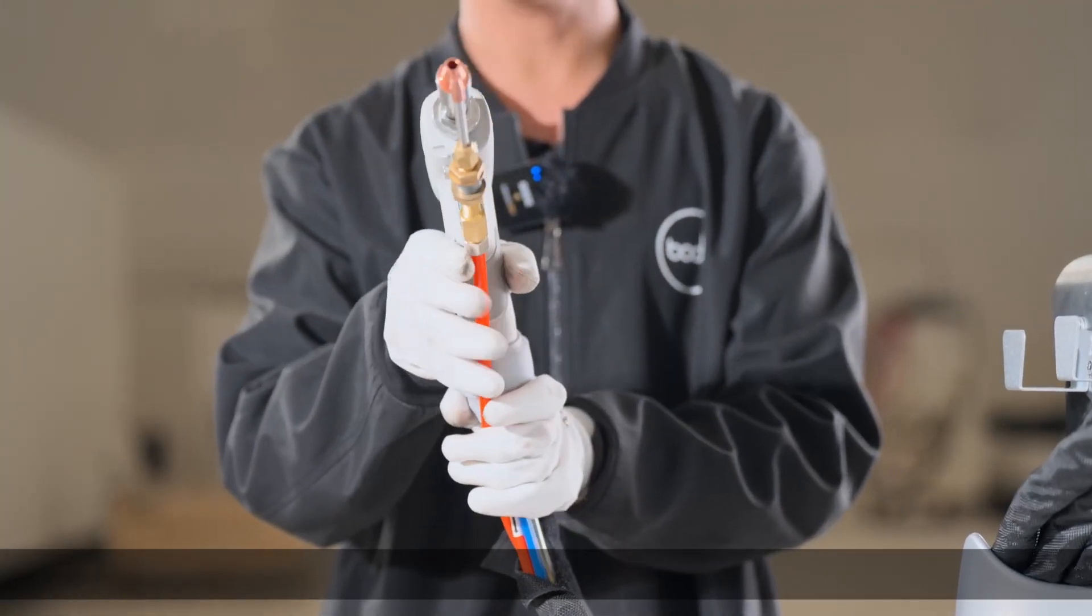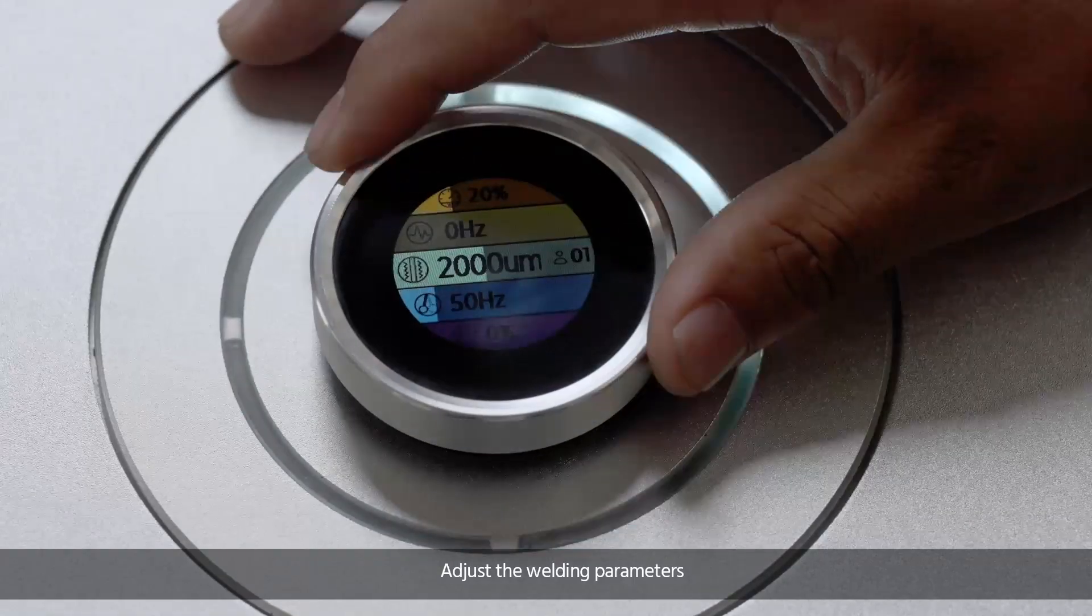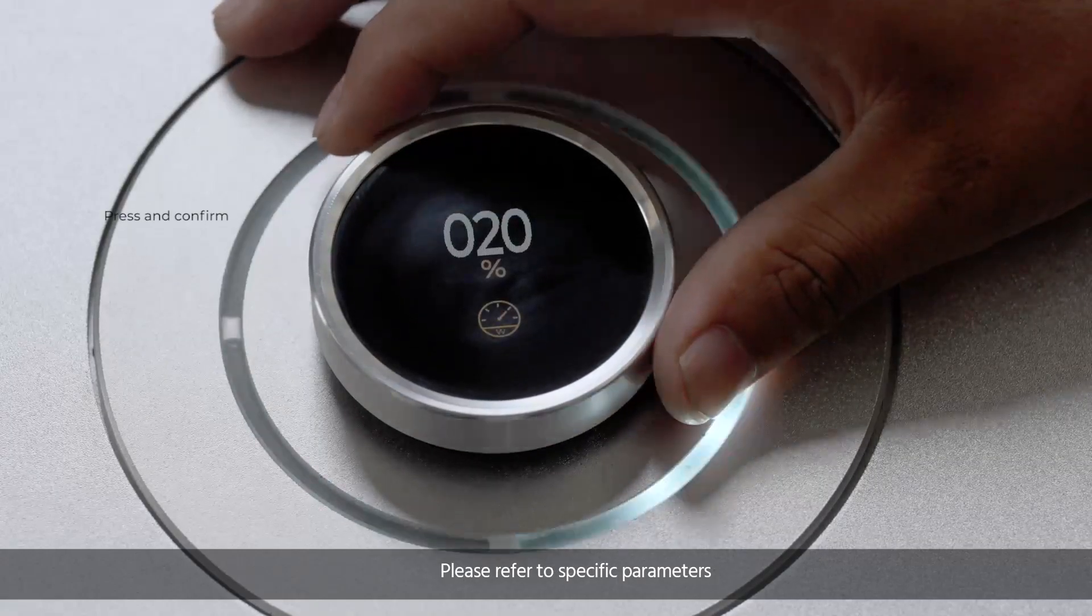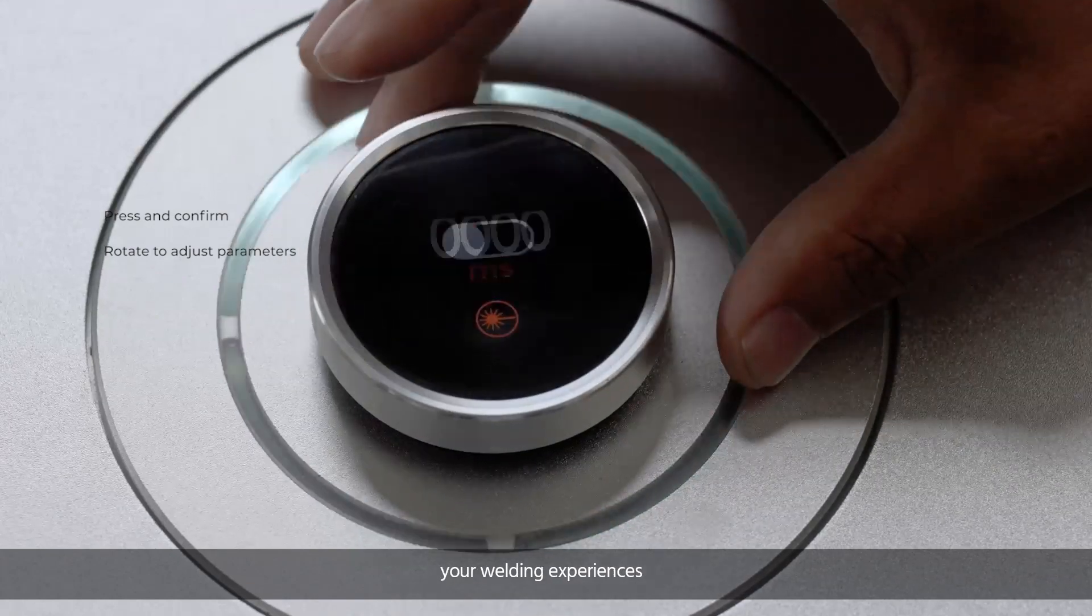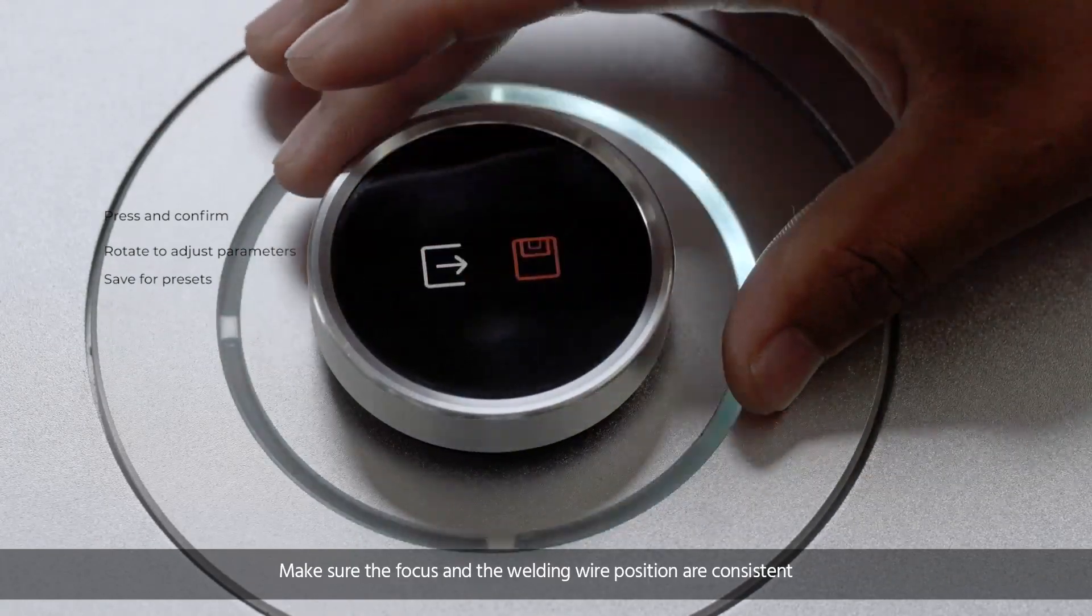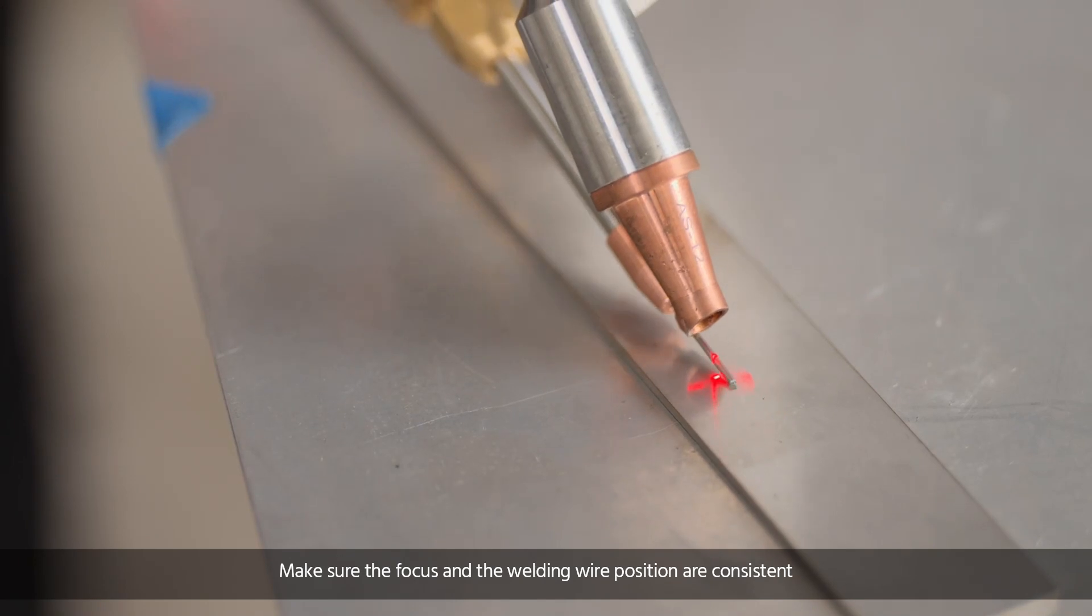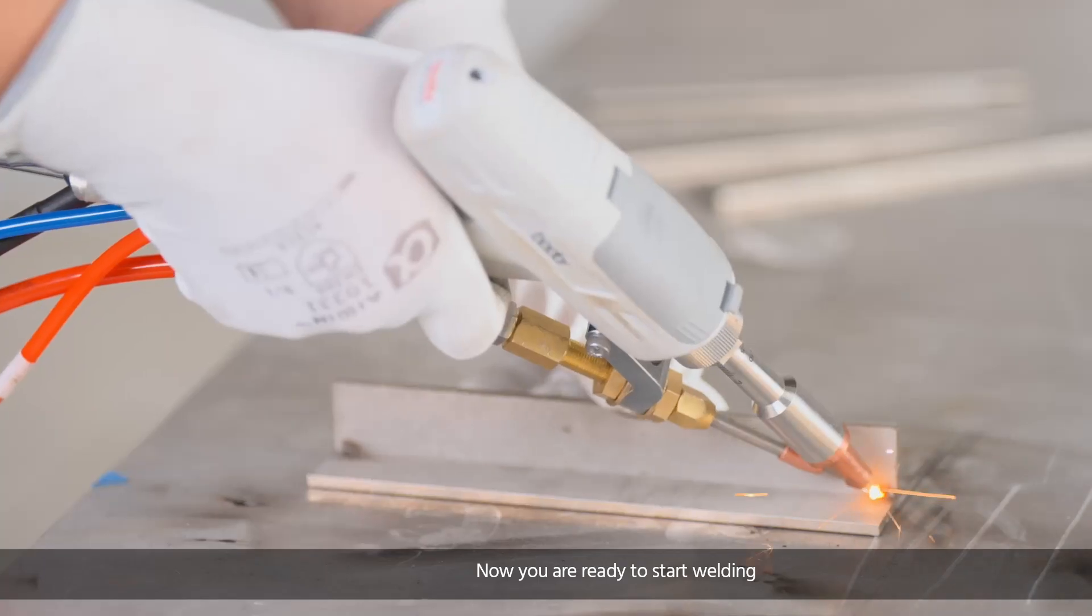Adjust the welding parameters. Please refer to specific parameters according to the instruction manual or your welding experience. Make sure the focus and the welding wire position are consistent. Now you are ready to start welding.